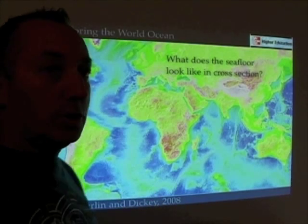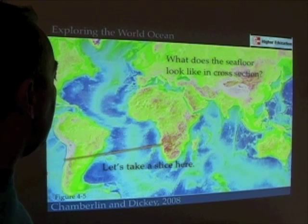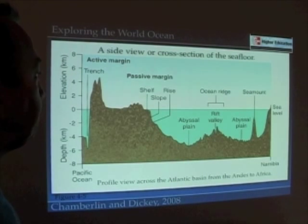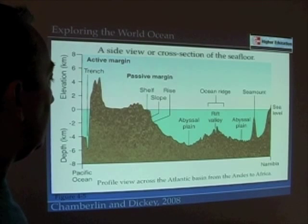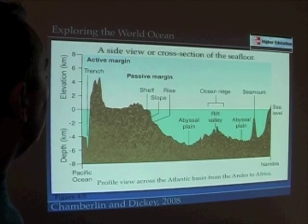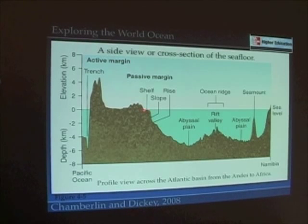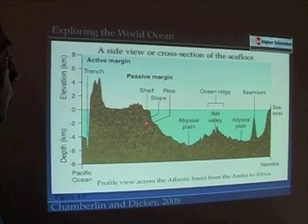We've been looking down at the ocean from outer space in some sense — but what happens if we take a slice across the ocean? Here we have figure 4-5 from the book. This is a slice from South America to the coast of Africa. Here we see, on one side right up against the Andes, an oceanic trench. We have the Andes Mountains, the continent of South America, and then this lip of eastern South America — around Brazil — that's covered in water. This is called the continental shelf; it's still continental crust, just the submerged portion of the edge of the continent.